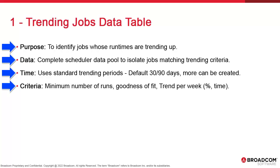Goodness of fit is a standard statistical calculation, and in our case is the product of runtime length and upward trends. You set trending and goodness of fit minimums, and AI scans the scheduler's entire workload history. Higher values mean more restricted searches. For example, setting a minimum goodness of fit of 70% produces a very selective list of jobs with presumably high and increasing runtimes. These are the prime candidates for design improvements. If you need a refresh on goodness of fit, we recommend revisiting the analytics course produced in the thick client.